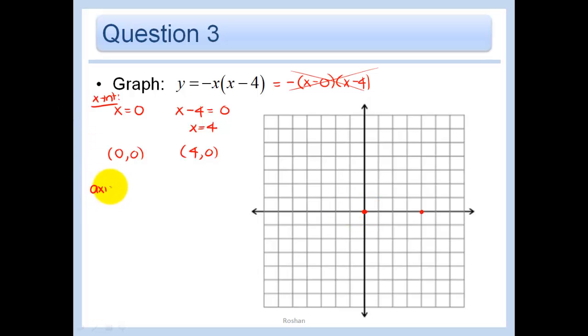Our axis of symmetry is just halfway in between. Halfway between 0 and 4 is 2. And let's go ahead and find the vertex. The vertex is going to be where x is 2. What is y when x is 2? We get y equals negative 2 times 2 minus 4. In other words, negative 2 times negative 2 or 4. So our point is 2, 4. That axis of symmetry is just x equals 2.